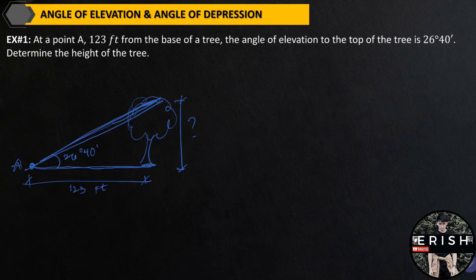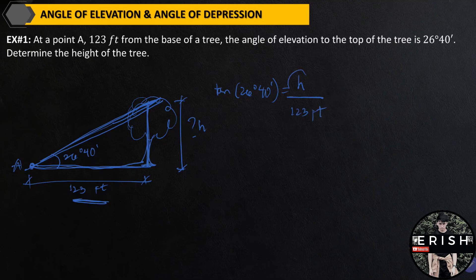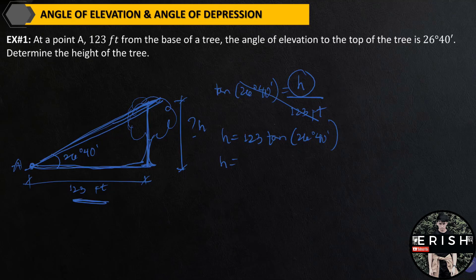Since we have a given angle of elevation and we know this side, we need to find the height, considering this as a right triangle. The tangent ratio from the trigonometric function involves all the given values — the angle and the 123-foot side. Tangent of 26 degrees 40 minutes equals opposite (height, unknown) over adjacent (123 feet). Solving for height: height equals 123 feet times tangent 26 degrees 40 minutes. By calculating, height equals 61.8 feet.